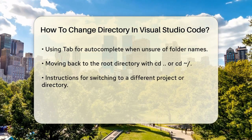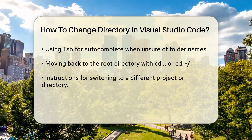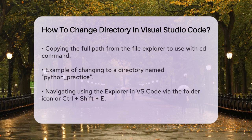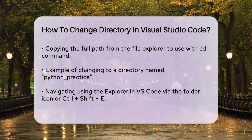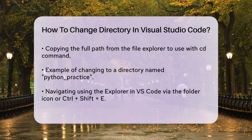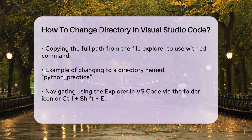But what if you want to switch to a completely different project or directory that's outside your current project? You can do this by navigating to the desired directory in your file explorer, copying the full path, and then pasting it into the terminal with the CD command. For instance, if you want to change to a directory named Python Practice, you would type CD /full/path/to/Python-Practice and press Enter.